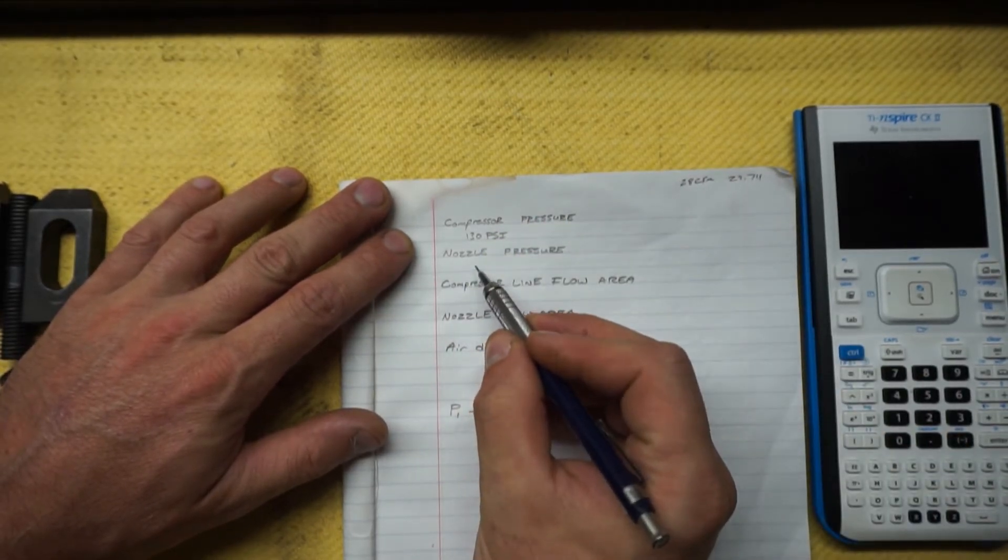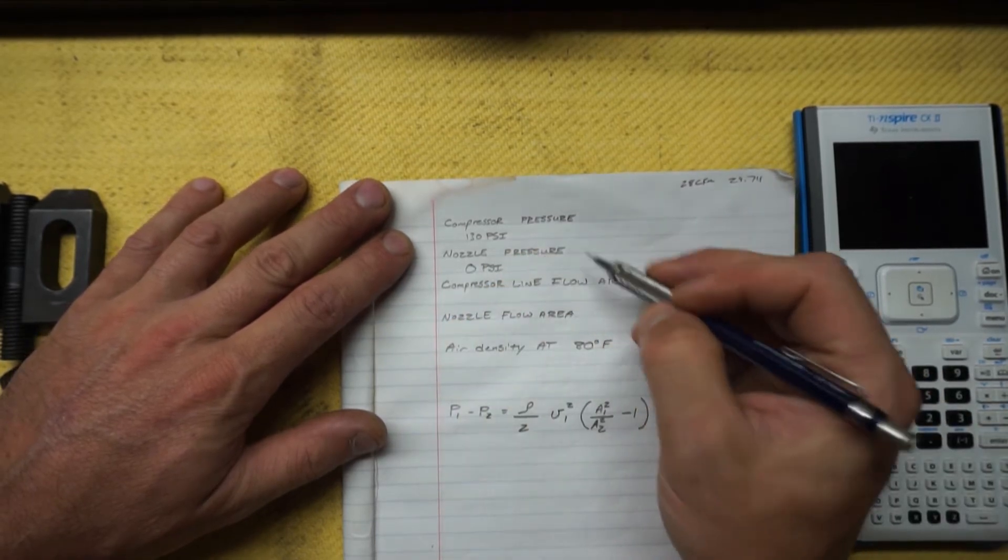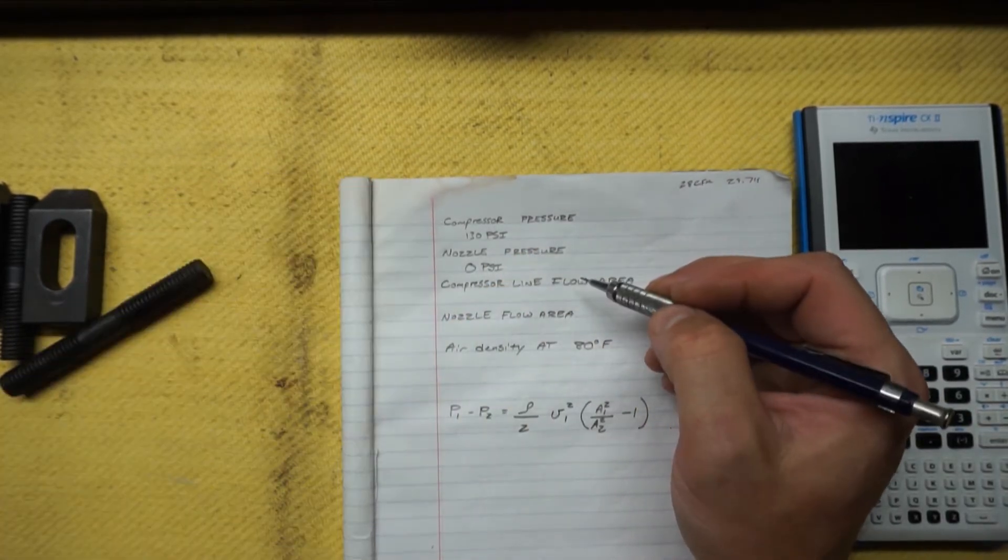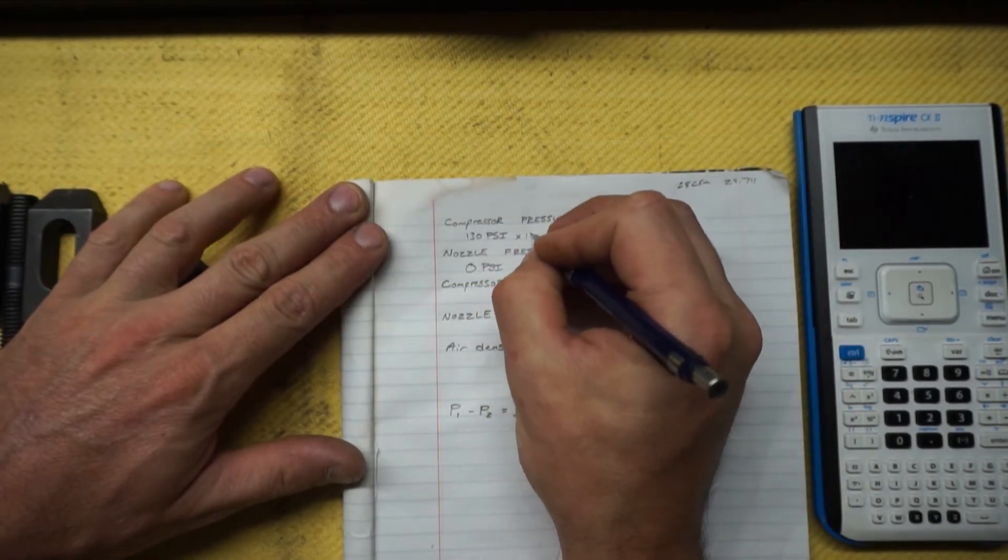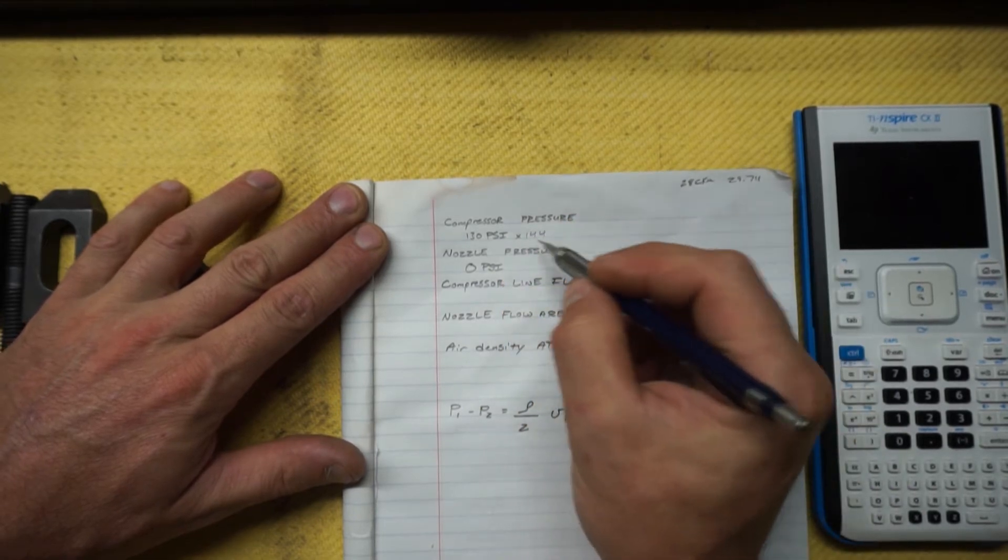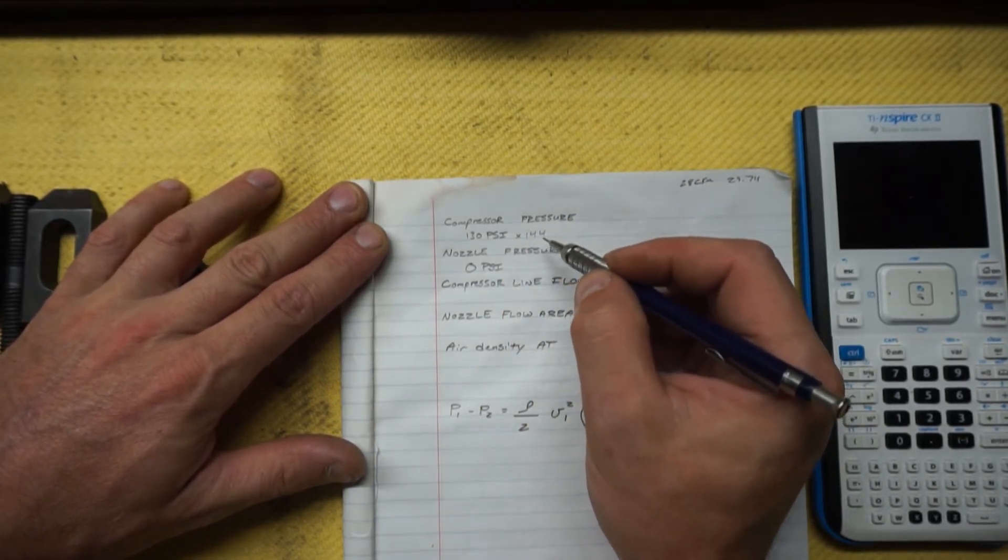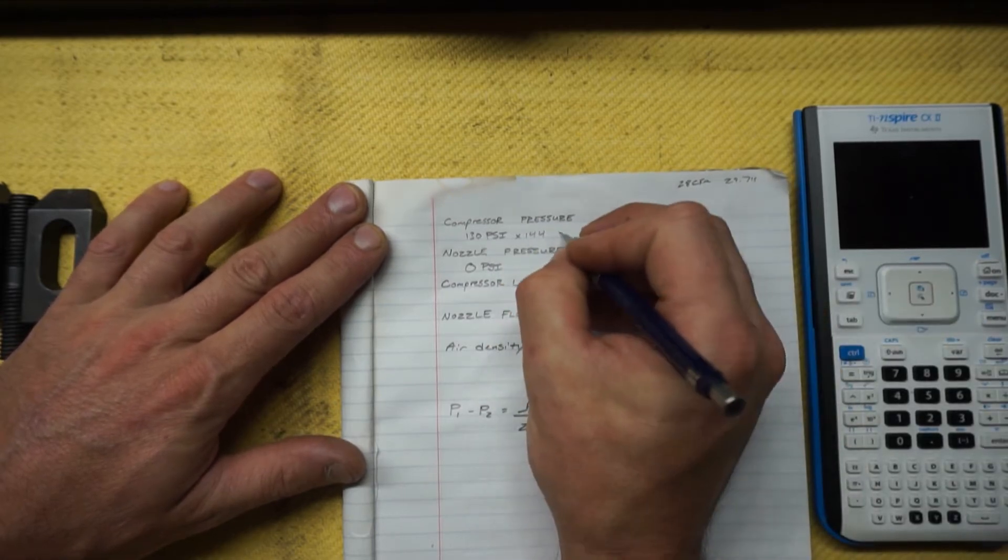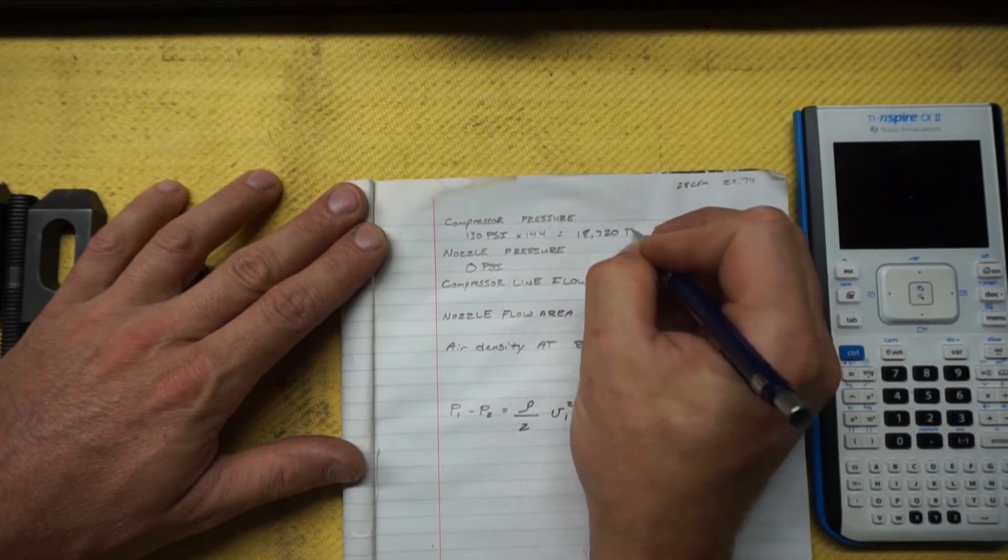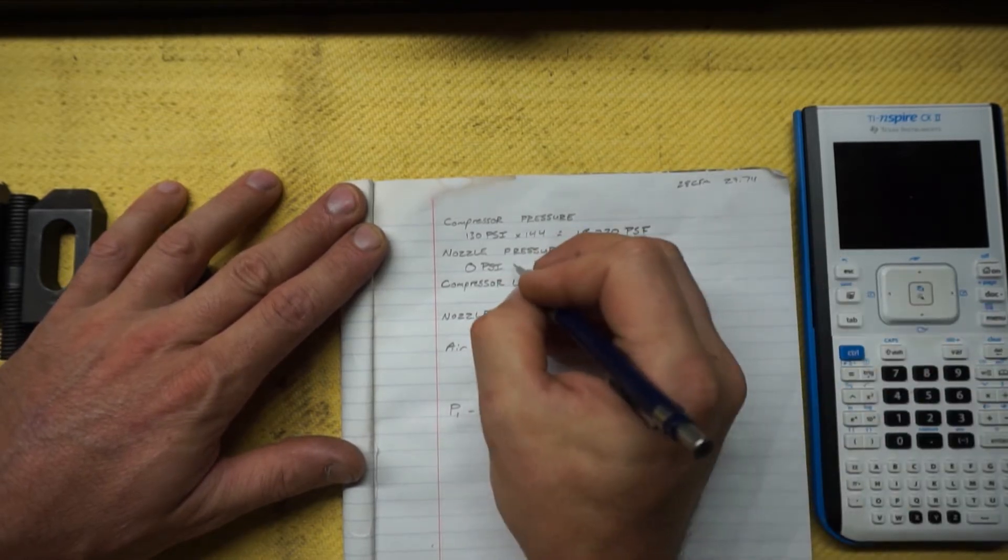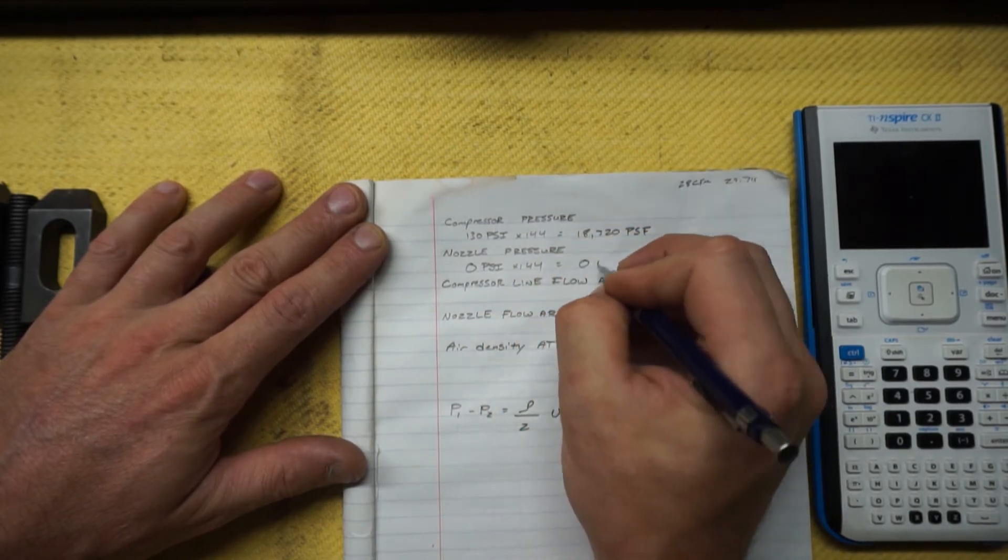For the nozzle pressure we want zero - it's gonna be wide open. Now pressure in this math has to be in pounds per square foot. So what you do is you would multiply this times 144, because 12 inch by 12 inch is a square foot, which is 144 square inches. So 144 times that, and what you get is 18,720 PSF. Zero times 144 is just zero PSF.